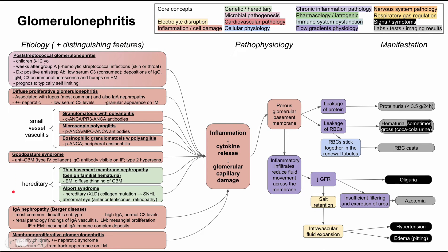Two hereditary types exist. Thin basement membrane nephropathy, also called benign familial hematuria, shows diffuse thinning of the glomerular basement membrane on electron microscopy. Alport syndrome is X-linked dominant with a collagen mutation and can result in sensorineural hearing loss, anterior lenticonus, and retinopathy.